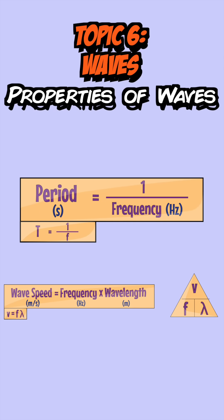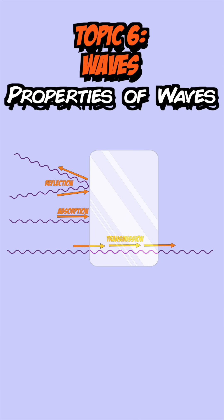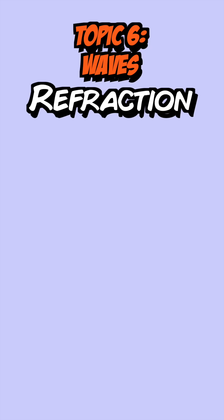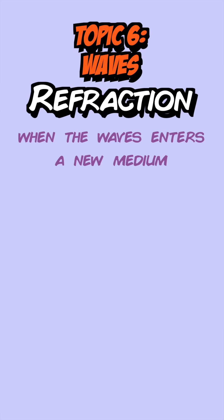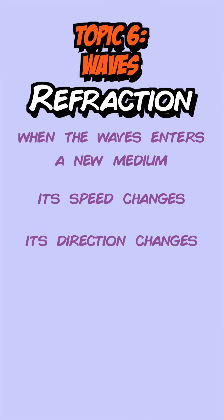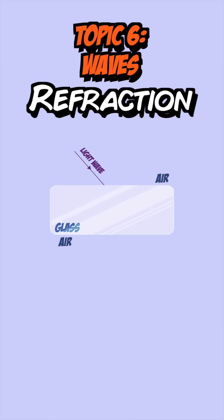When a wave reaches a boundary between two materials it can be reflected, absorbed, or transmitted. During transmission, refraction can occur — this is where the wave enters a new medium, its speed changes and its direction changes too. When going from a less dense to a more dense material it bends towards the normal; from high to low density it bends away from the normal.